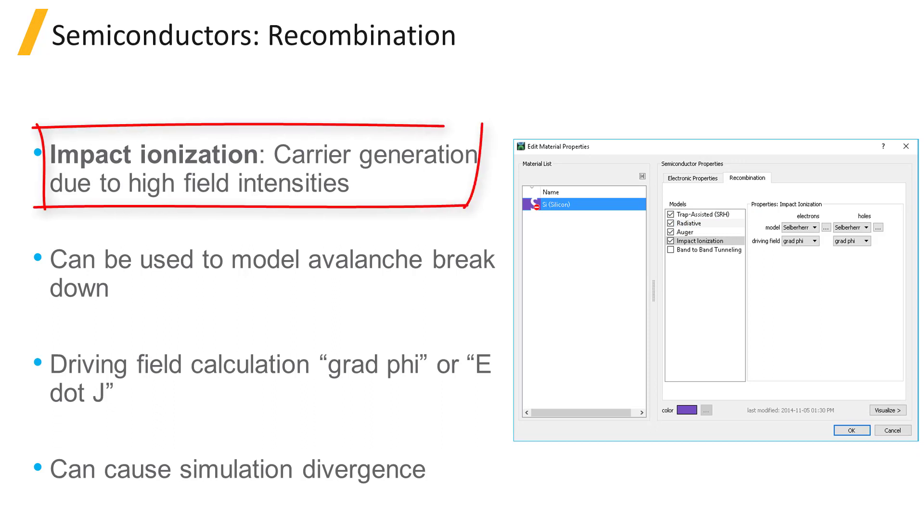Impact ionization is a carrier generation process where an electron or hole, accelerated by a high field, will relax by transferring energy to the lattice. When energy exceeding the band gap is transferred to the lattice, an electron-hole pair is excited and separated by the strong local field, generating additional free carriers.